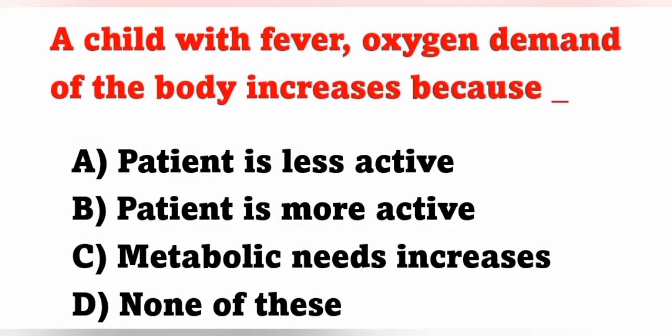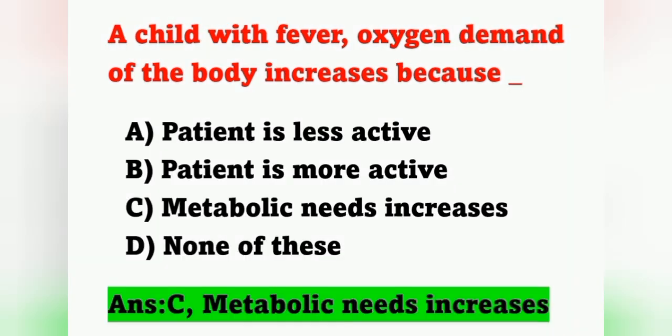Next question: a child with fever has increased oxygen demand because — options: A) patient is less active, B) patient is more active, C) metabolic needs increase, D) none of these. The reason is that metabolic needs of the body increase during fever, so the child requires more oxygen. Option C is the correct answer.